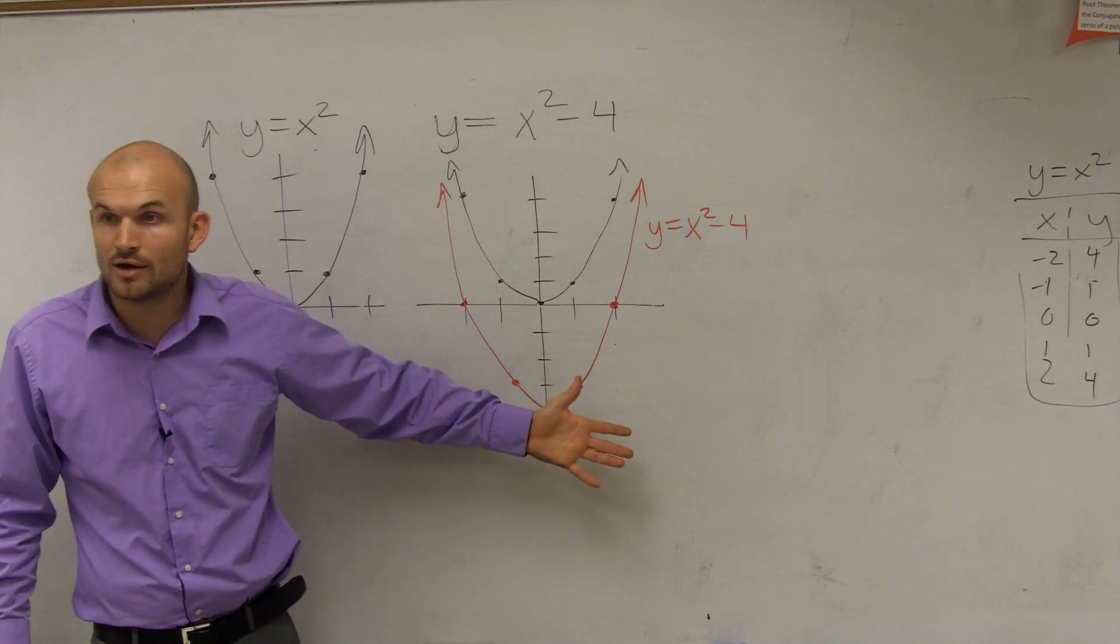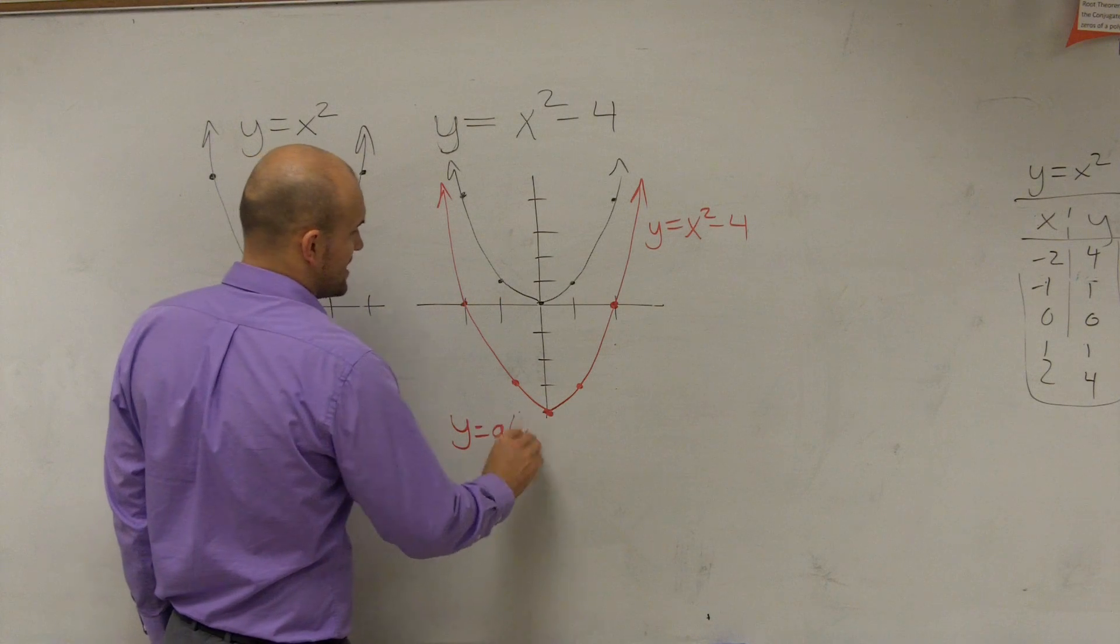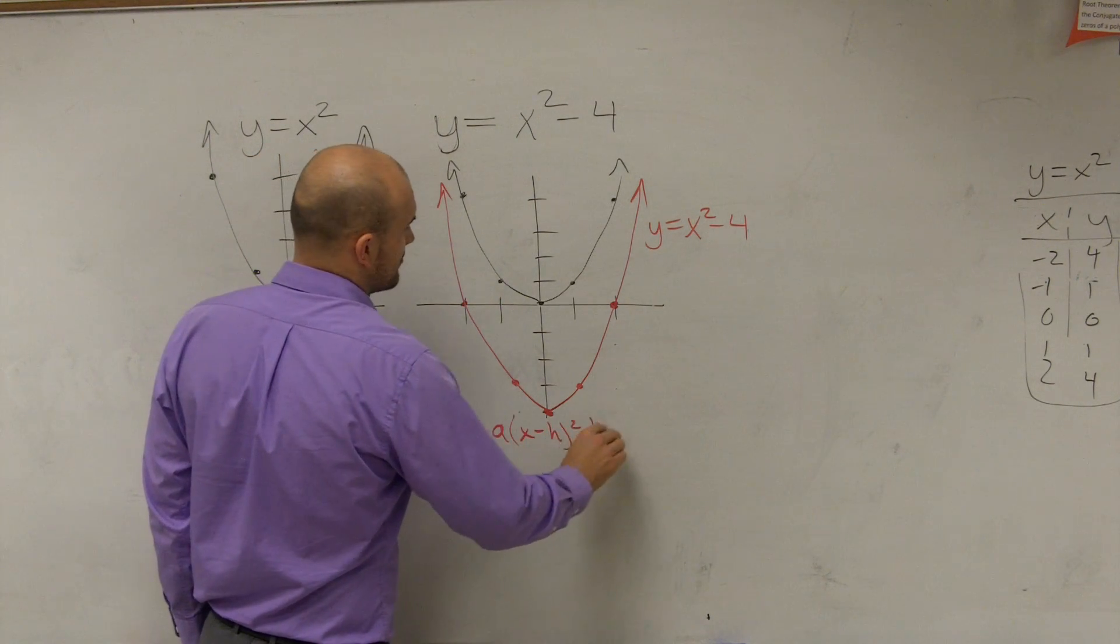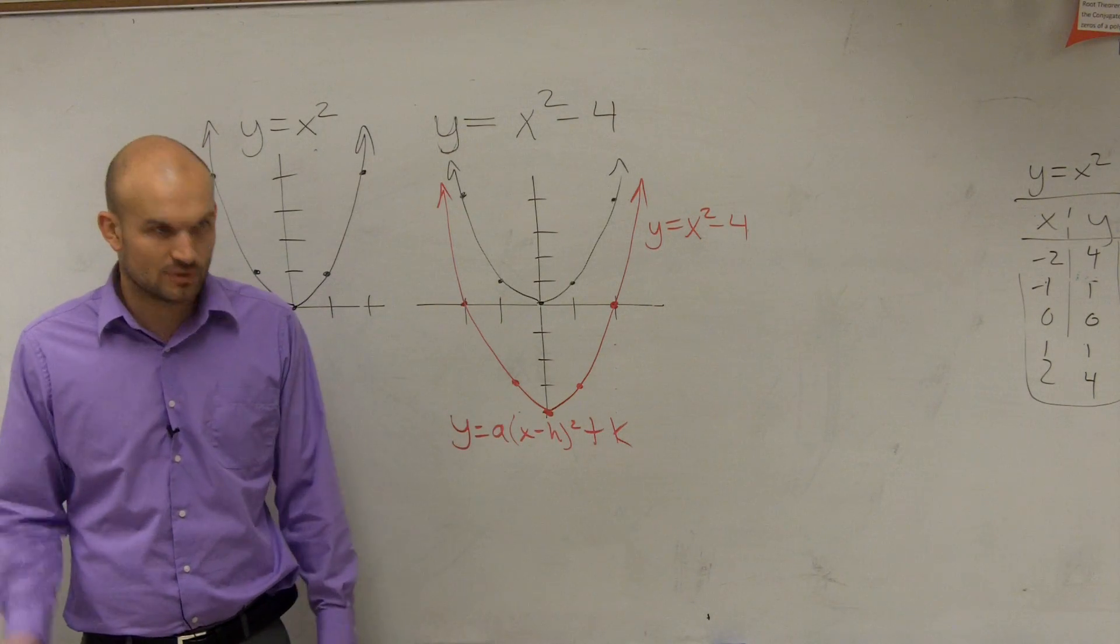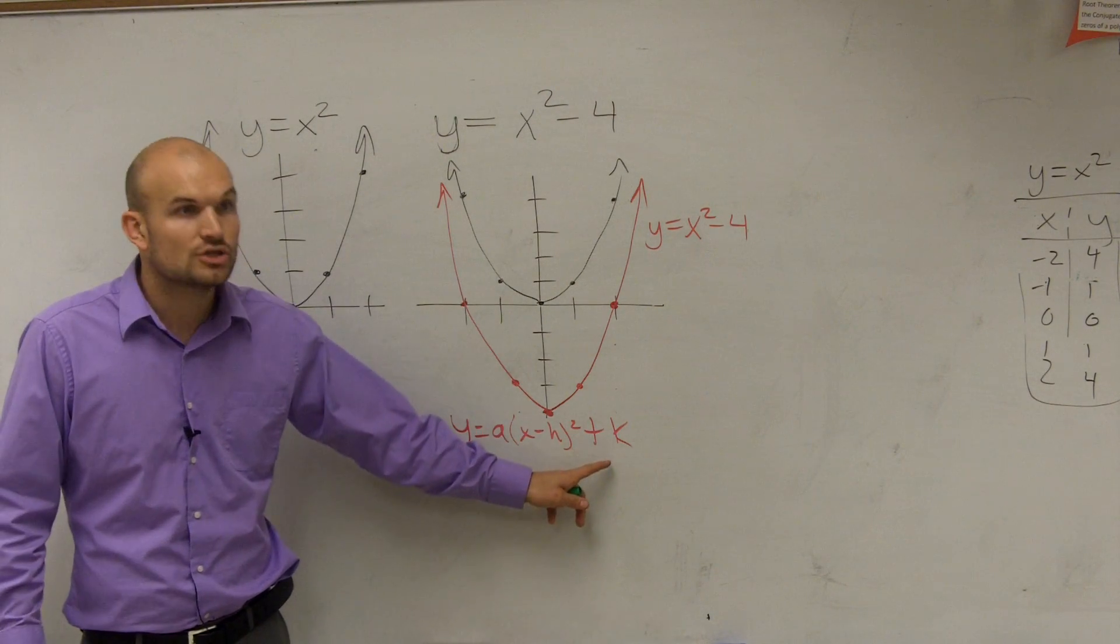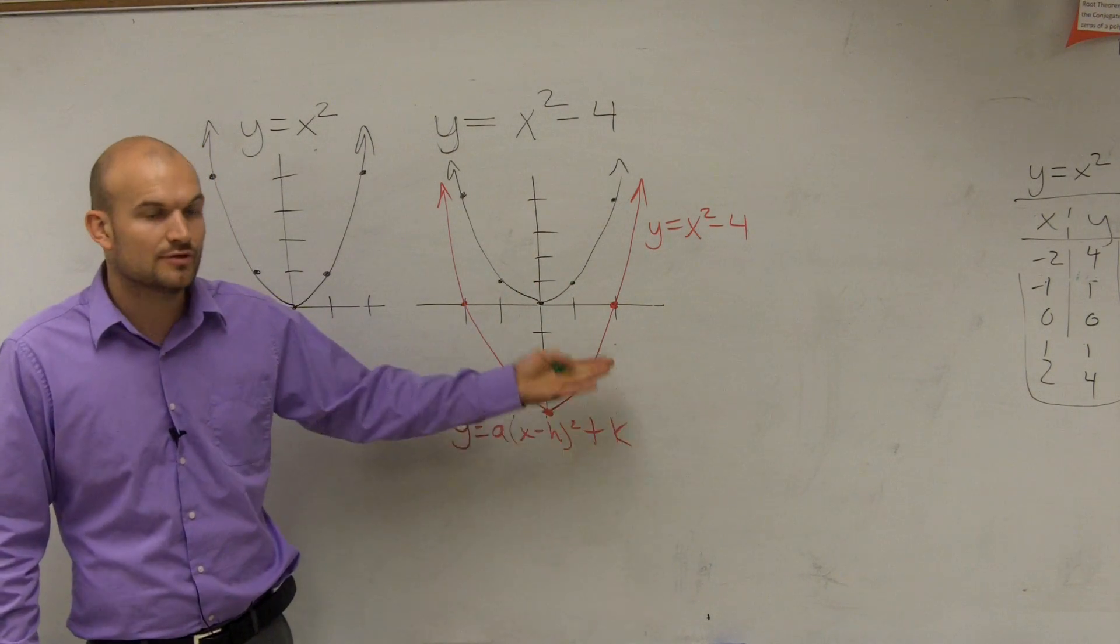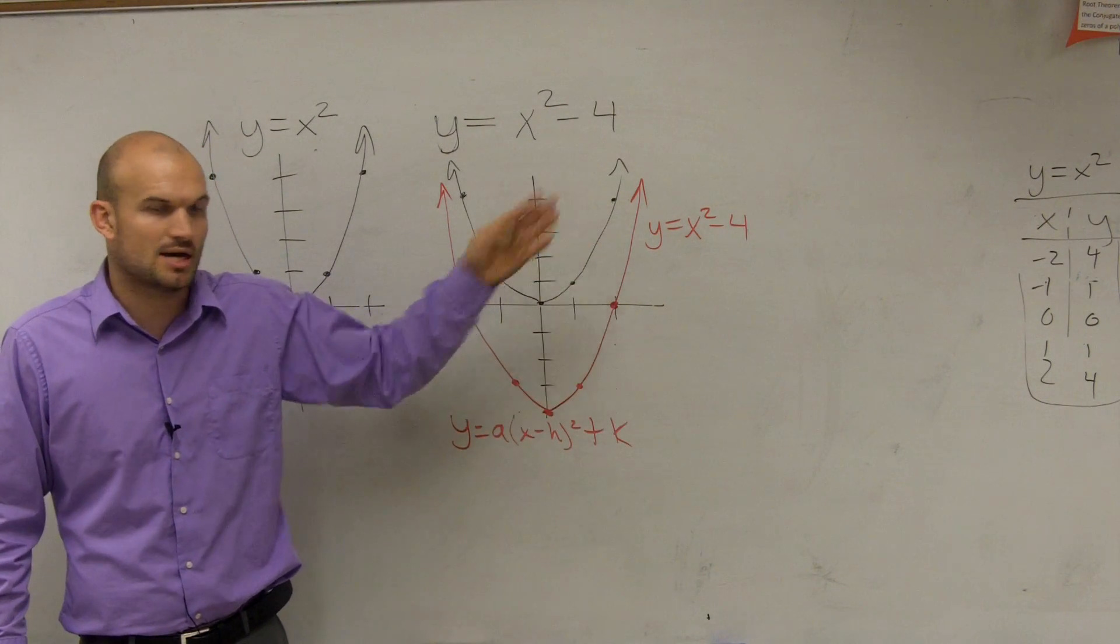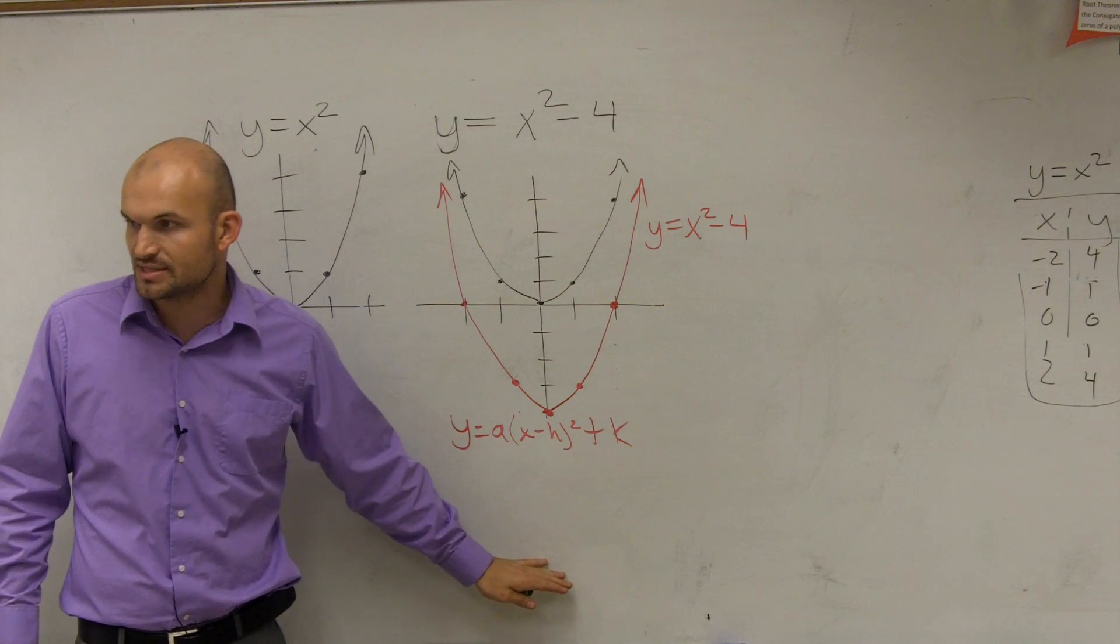Now, how did I know how to graph it down 4? Well, because, guys, in your notes, I wrote y equals a times x minus h squared plus k. Right? And what did I tell you k did to the graph? You wrote it down. k shifts your graph up or down. So if k was positive, you'd shift the graph k units up. When k is negative, you shift the graph k units down. Does that make sense?